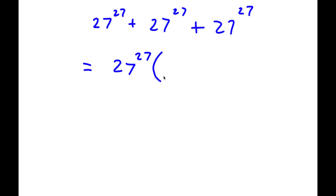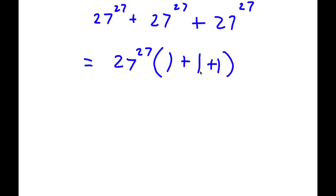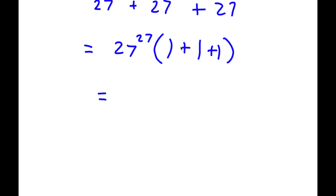So now I have 27 to the power of 27 times — well, 27 to the power of 27 divided by 27 to the power of 27 is 1, because anything divided by itself is 1. So I have 1 plus 1 plus 1, and 1 plus 1 plus 1 is 3. So I have 27 to the power of 27 times 3.